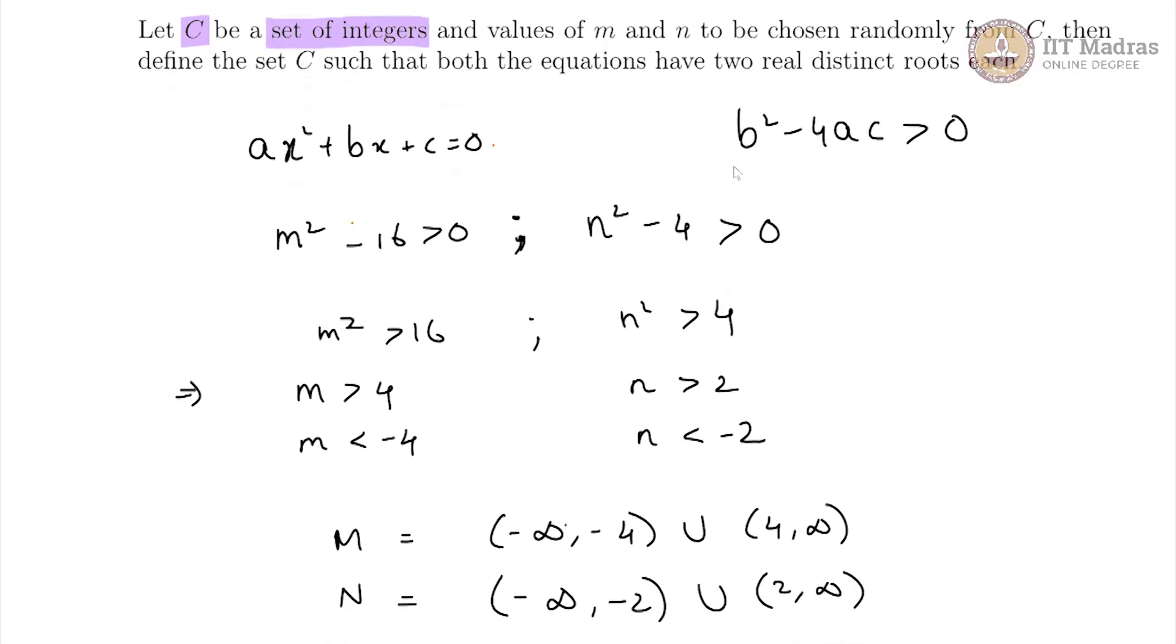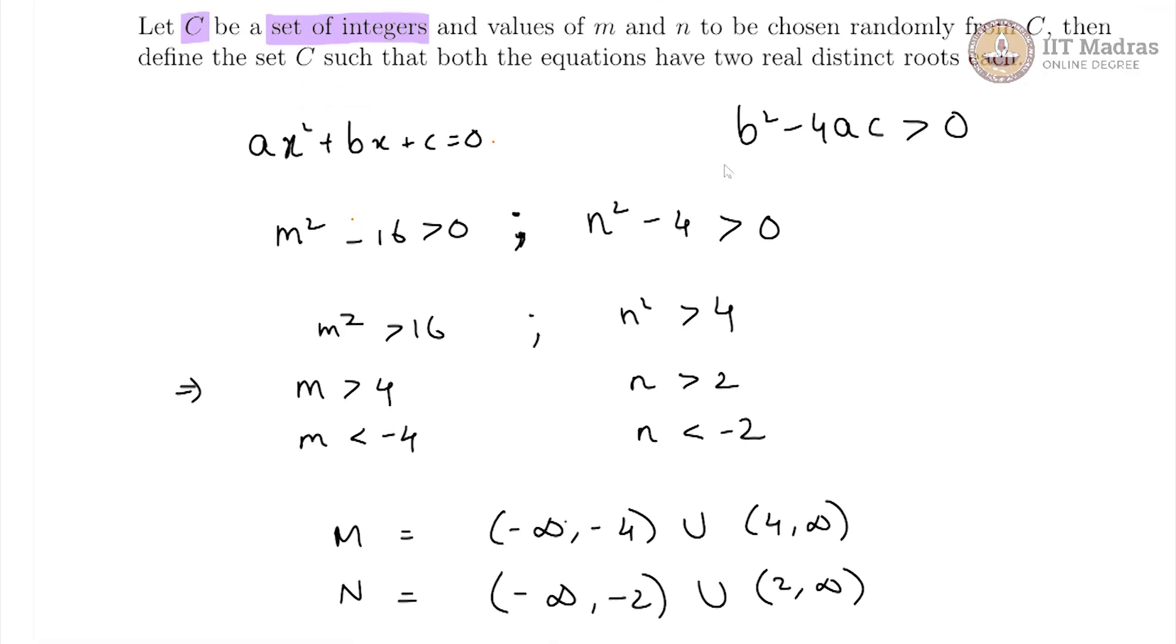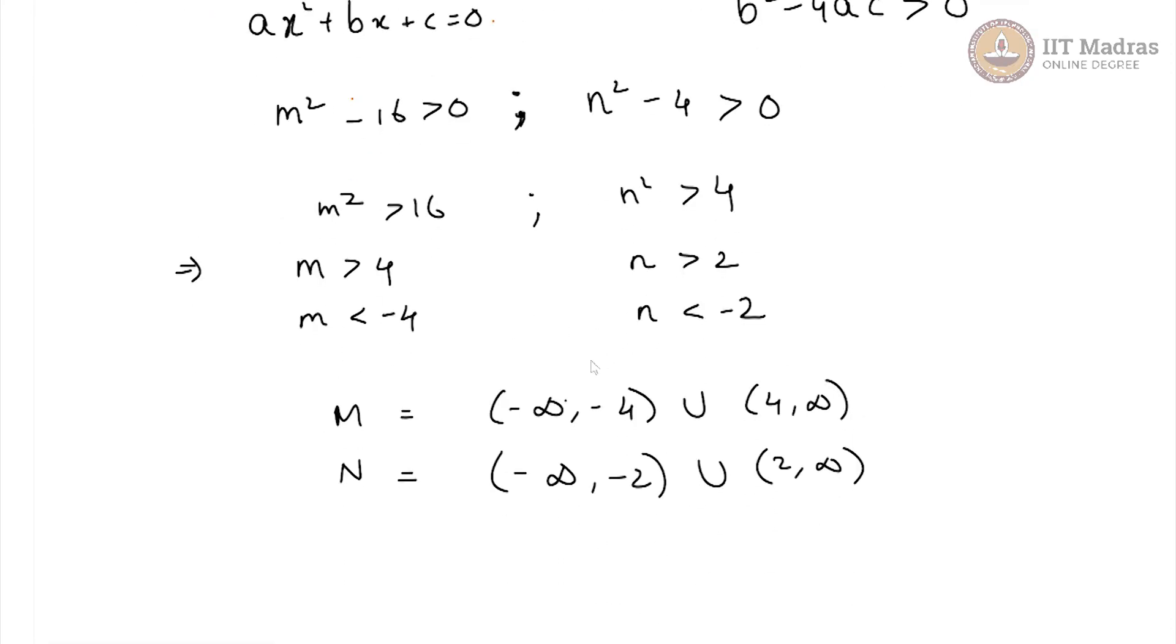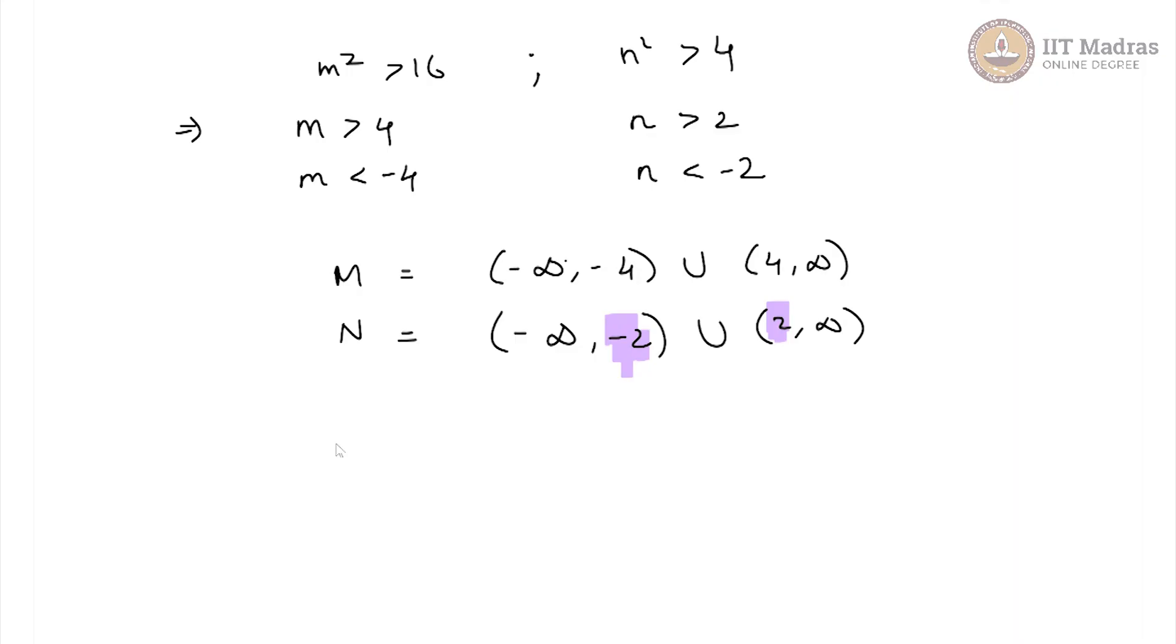So this is necessarily one single set we are taking and M and N should be chosen from that set. So we clearly cannot have M being -2 or 2 or even -3 or 3.